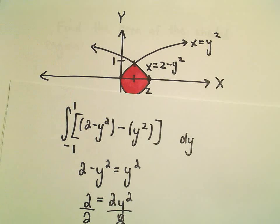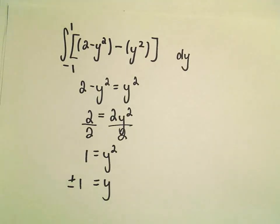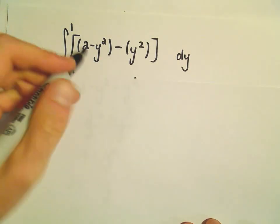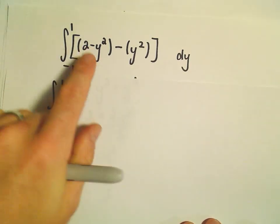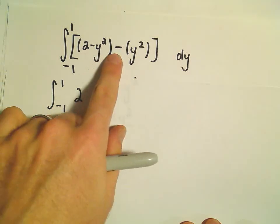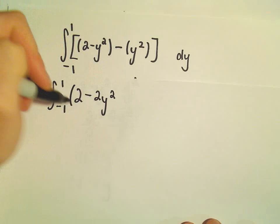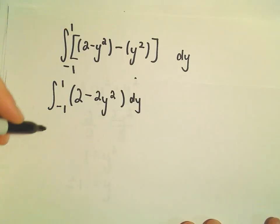So, negative 1 and positive 1. And this is now the function that we'll have to integrate. So, might as well simplify it real quick. So, that's going to be 2. It looks like we would have, so, minus y squared minus y squared will give us a negative 2y squared.